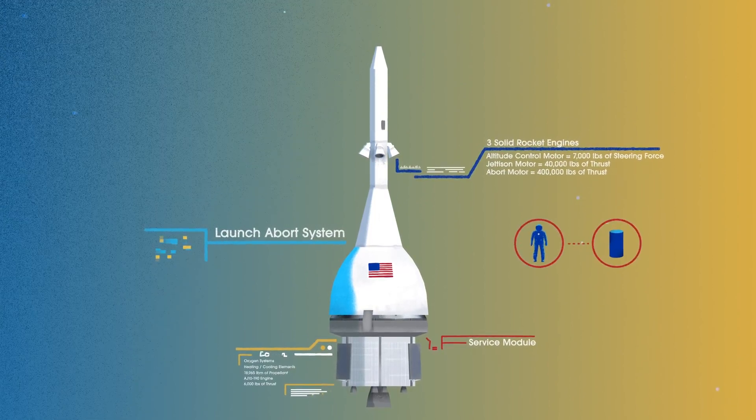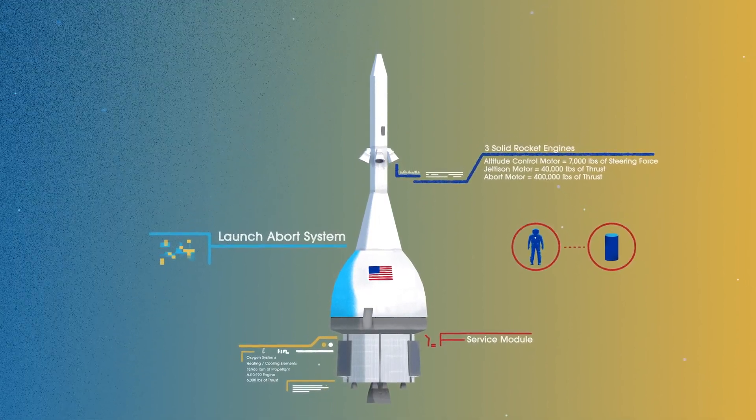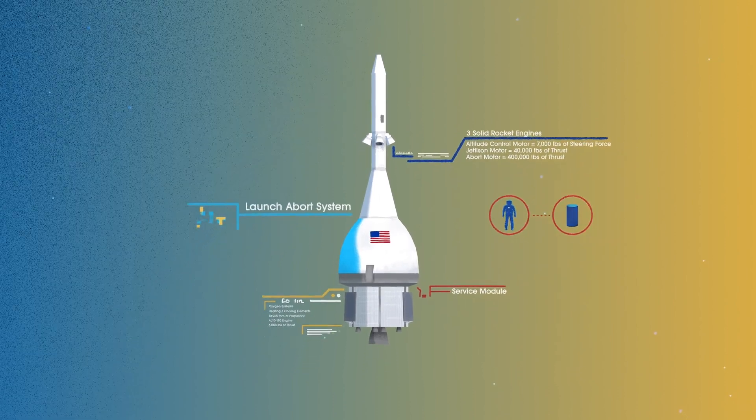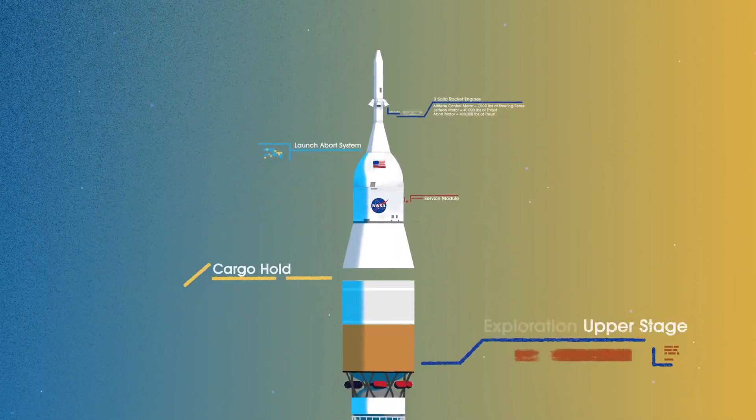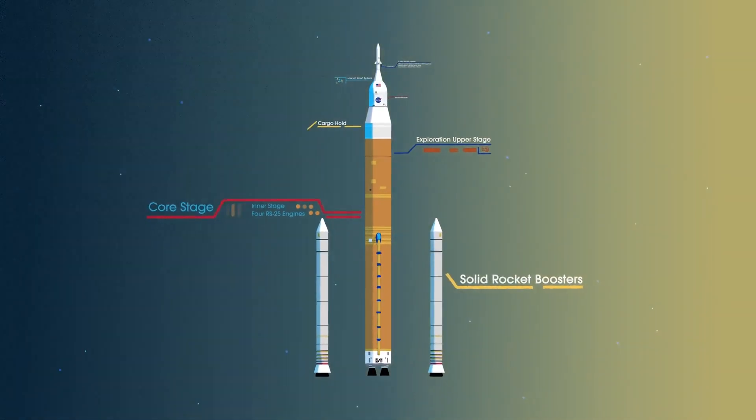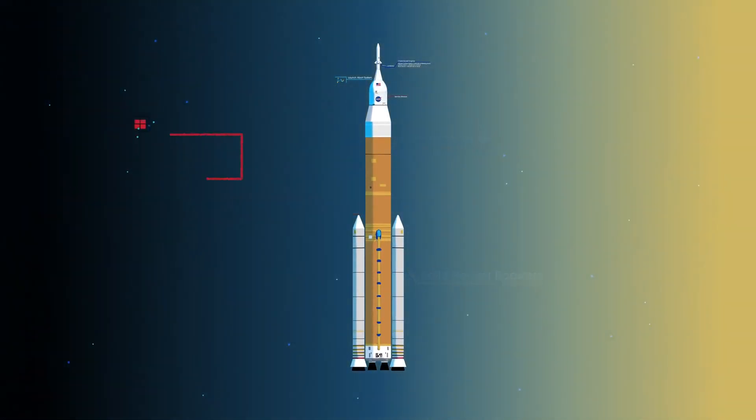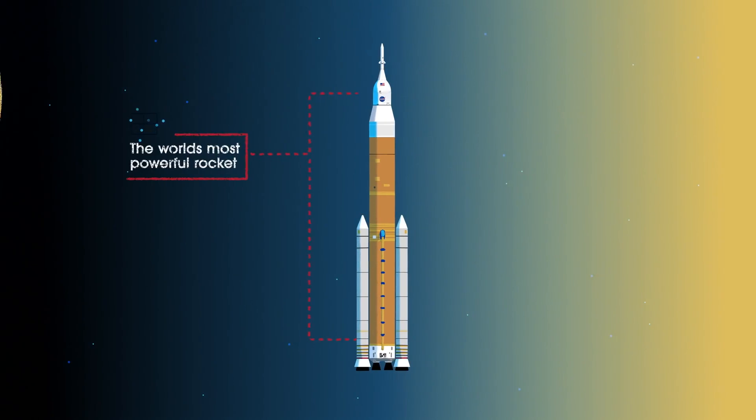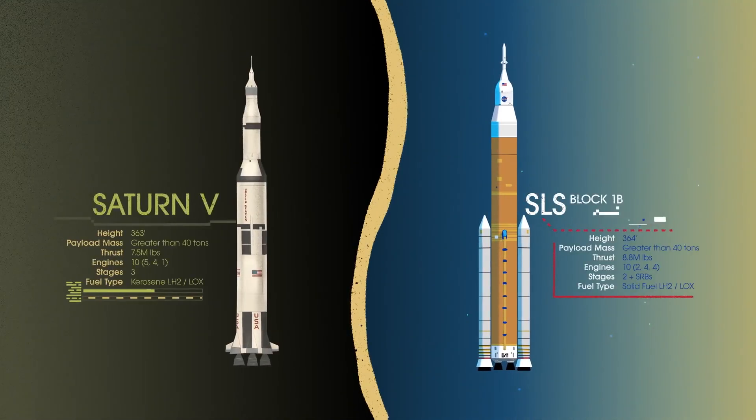To accomplish the task of launching our crew and heavy payloads, NASA is building the Space Launch System, comprising of a cargo hold, an exploration upper stage, a massive core stage, and two extended solid rocket boosters. Altogether, this is the world's most powerful rocket, and it exceeds the legendary Saturn V of the Apollo era in numerous ways.